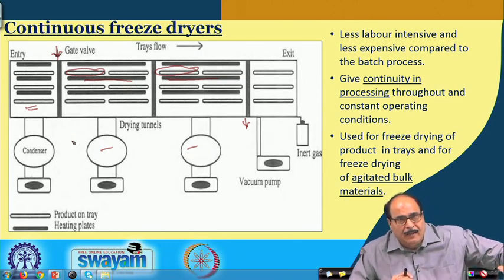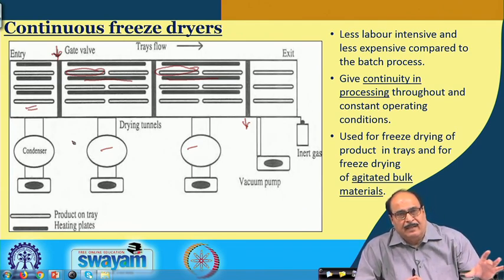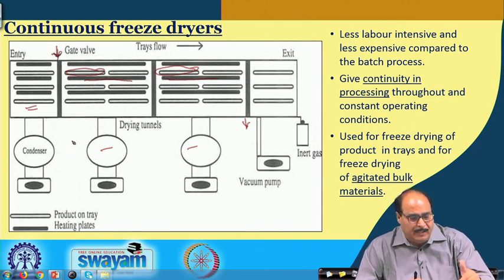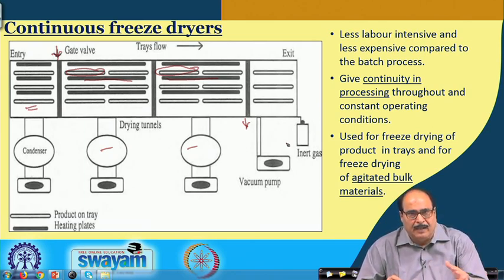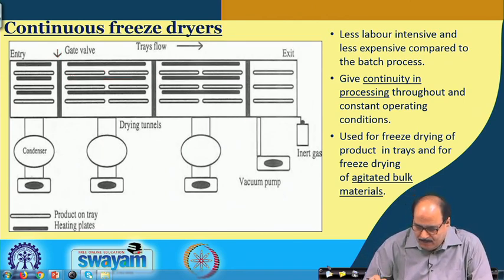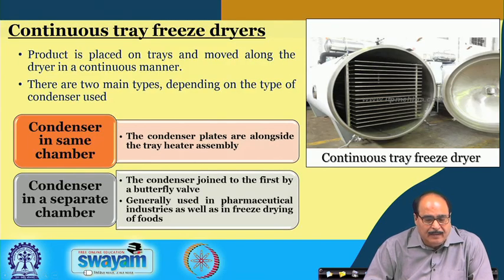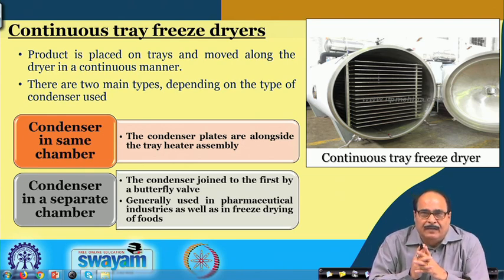The material on the conveyor belt, kept in trays, moves so the trays come in contact with the heating plates. Finally, inert gas is used to open the exit lock and the material is collected at the end of the process. Similarly, the continuous tray freeze dryer has been shown here — the product is placed on trays and moves along the dryer in a continuous manner.